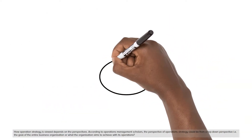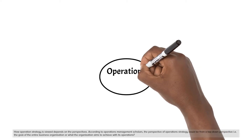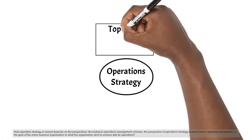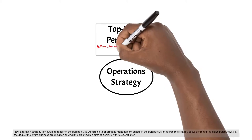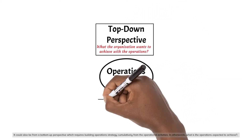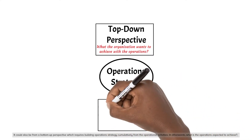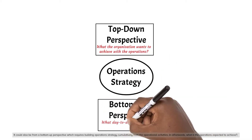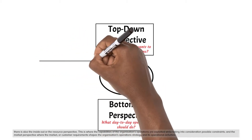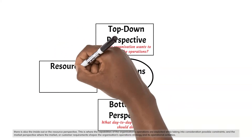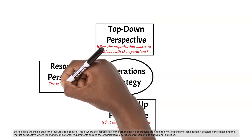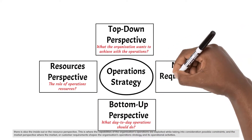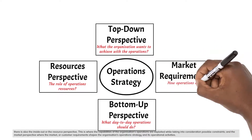How operations strategy is viewed depends on the perspective. According to operations management scholars, the perspective of operations strategy could be from a top-down perspective — that is, the goal of the entire business organization or what the organization aims to achieve with its operations. It could also be from a bottom-up perspective, which requires building operations strategy cumulatively from the operational activities, in other words, what the operations are expected to achieve. There is also the inside-out or the resource perspective, where the capabilities of the organization's operations are exploited while taking into consideration possible constraints. And the market perspective, where the market or customer requirements shape the organization's operations strategy and its operational activities.